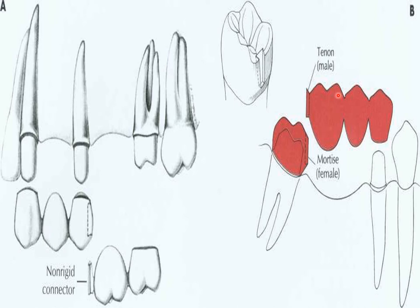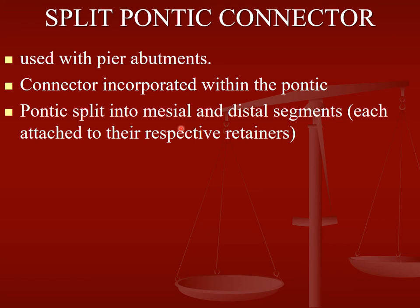When it is not possible to make one bridge with the same path of insertion, you have a tenon attached to one component and a mortise attached to the other component. The mortise is prepared here and the tenon fits here — it gets attached and cemented together.